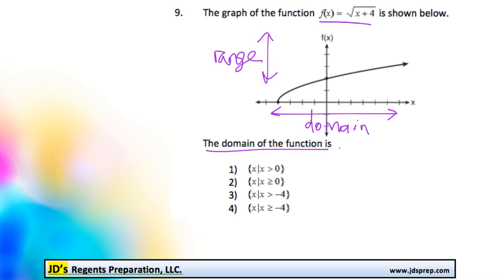So taking a look at our x values, we have a minimum value here at negative 4. And then the graph continues on from there, moving to the right, meaning every point along the graph is greater than or equal to negative 4.